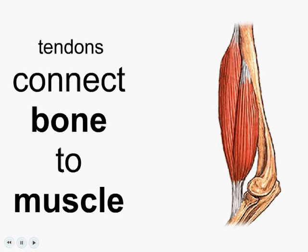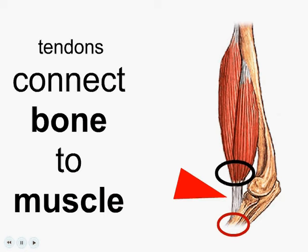Tendons connect bone to muscle. Let's have a look at this picture of an arm. We've got bone connecting to muscle. Right here, this must be a tendon — it's connecting bone to muscle.